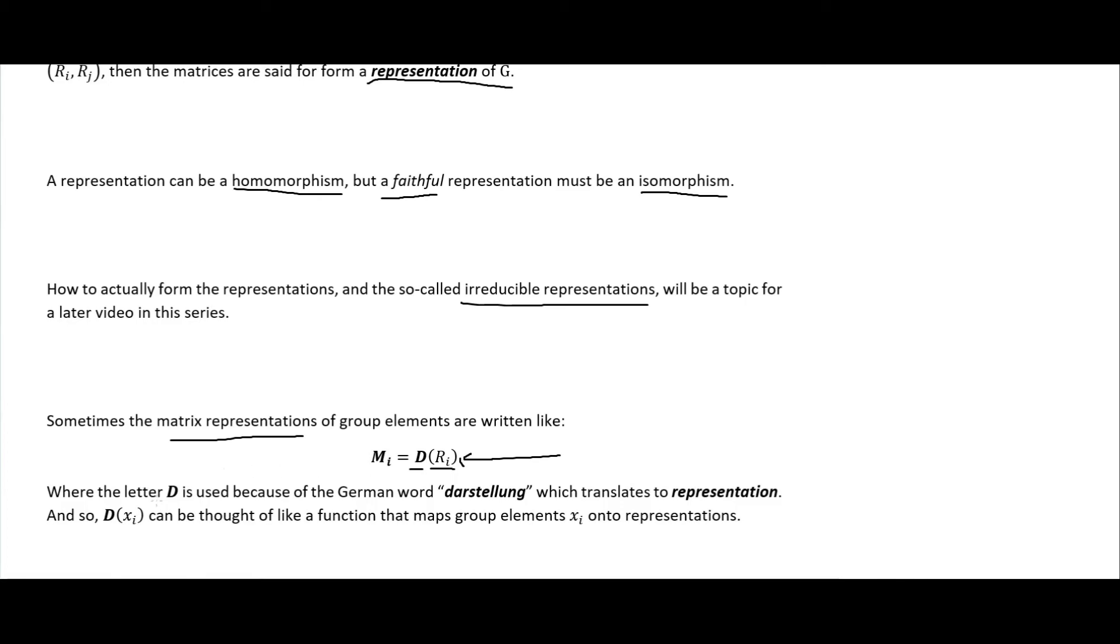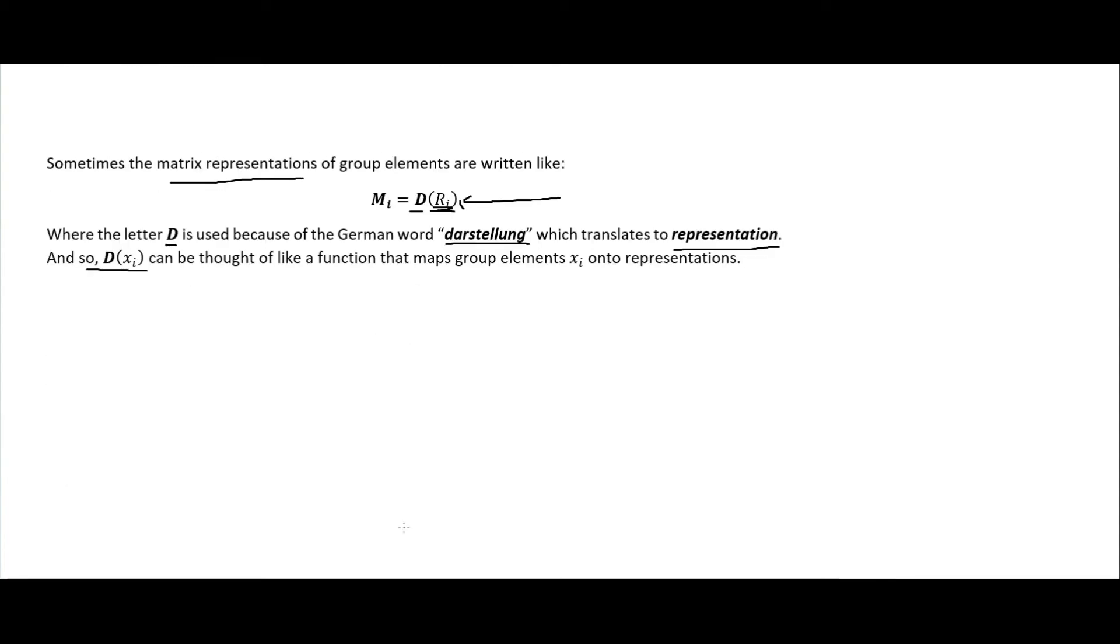The letter D is used because of the German word Darstellung, which translates to representation from German. You'll see this quite often where the thing in parentheses is sort of like what it's a function of, so it's mapping our group elements onto these matrices here.